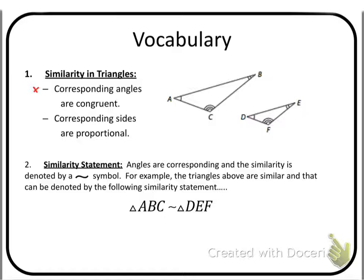Vocabulary: corresponding angles are congruent. So if we're looking at this, angle A is congruent to angle D — noted by that single arc. Angle B and E are congruent — two arcs each. And then C and F each have three arcs, so those are the same angle measures: A and D, B and E, C and F.